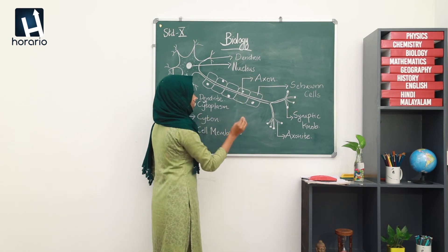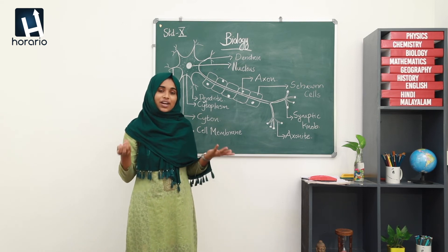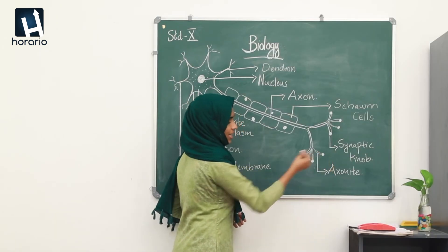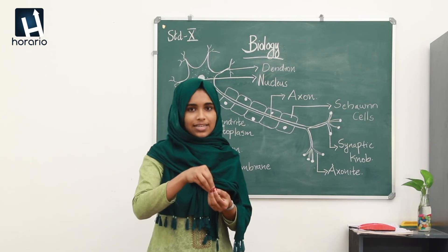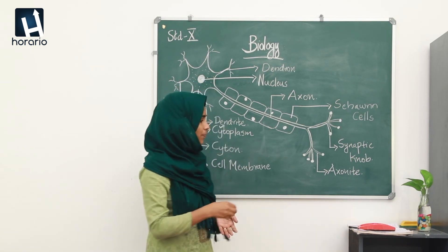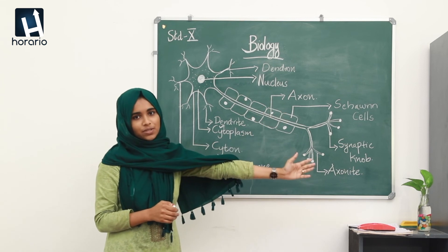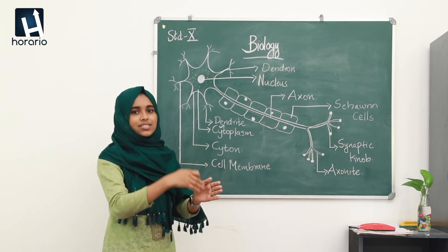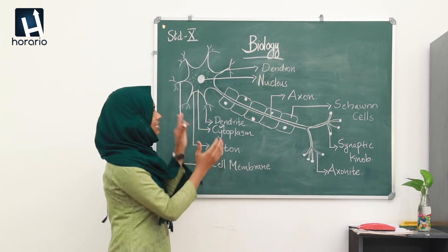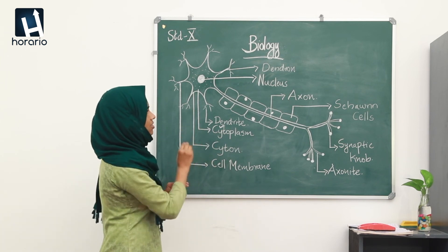The function of the axon is to transmit impulses to its branch, the axonite. The impulse reaches the axonite, and the axonite transmits the impulse to the synaptic knob. So it is a continuous process: impulses travel from dendrite → dendron → cytone → axon → axonite → and finally reach the synaptic knob. This is the transmission of impulses within a single neuron.